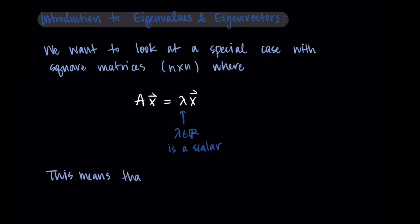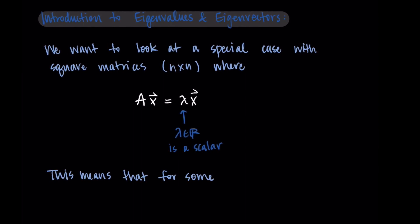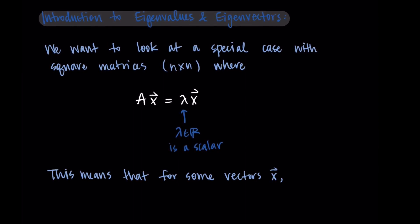So what does this mean if we have Ax equals lambda x? What this means is that for at least some vectors x, the matrix A simply scales x by lambda. A can be seen as a transformation. It's a matrix transforming a vector and sending it to a new vector. And in these specific cases, A is just scaling vector x by a scalar lambda. Let me show you what this looks like with some vectors.